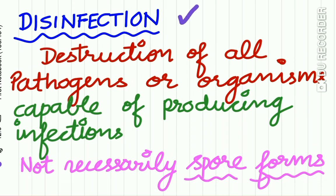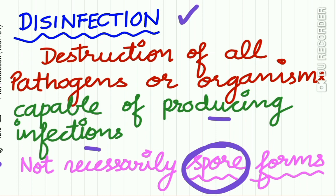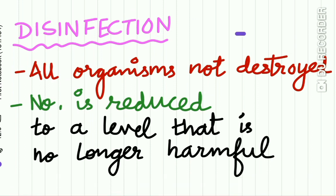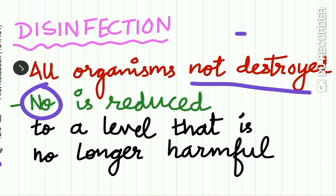What is disinfection? Disinfection is different from sterilization. Disinfection means the destruction of all pathogens or organisms capable of producing infection. But disinfection does not necessarily remove the spore forms. In sterilization, both vegetative and spore forms are removed, but in disinfection it is not guaranteed that spore forms are removed. All organisms are not destroyed, but the number of microorganisms is reduced to a level that is no longer harmful.